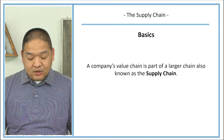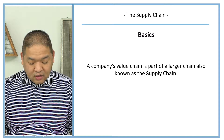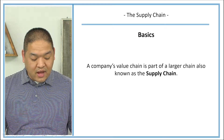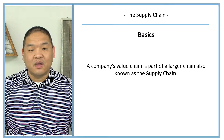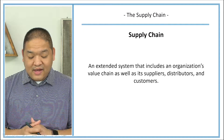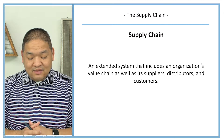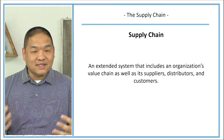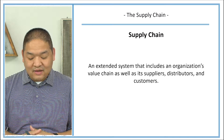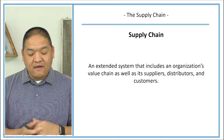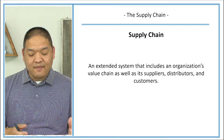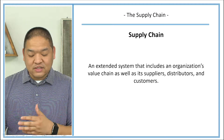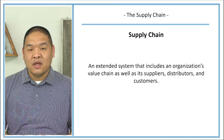A company's value chain is part of a larger chain, also known as the supply chain. It's an extended system that includes an organization's value chain as well as its suppliers, distributors, and customers.